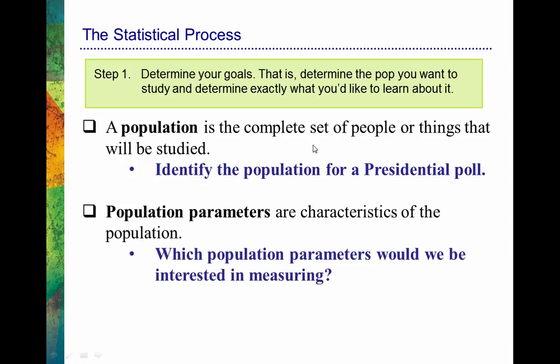From that population, we want to measure some characteristics known as population parameters — simply characteristics of a population. Of all those people who are going to vote, what might we want to learn? We might want to know the proportion or percentage of people who plan to vote for one of the candidates, say Obama. If 52% of people voted previously for Obama, that would be the population parameter corresponding to the percentage who voted for him, and we're using polling data to predict this population parameter.